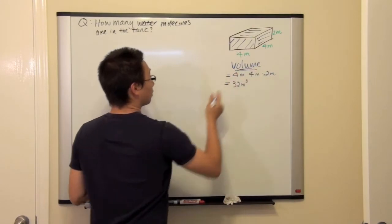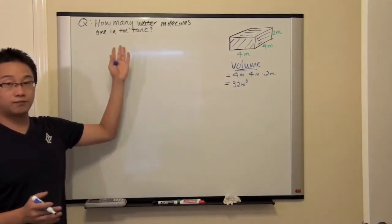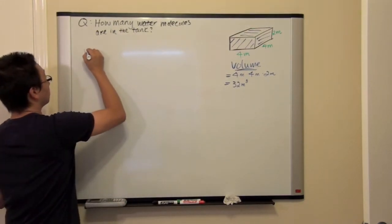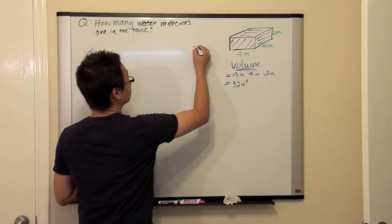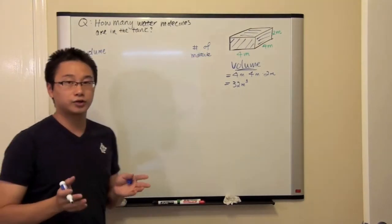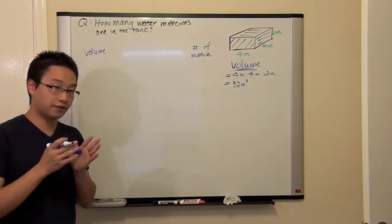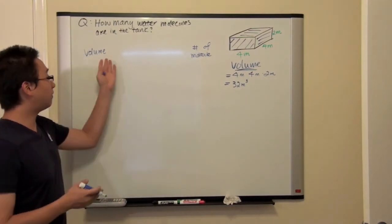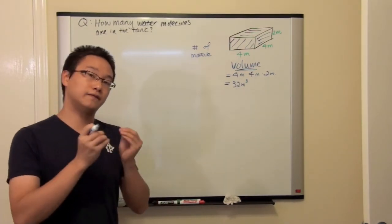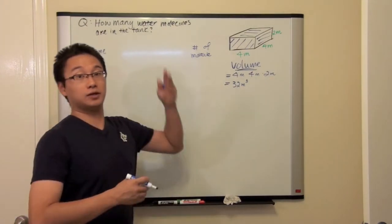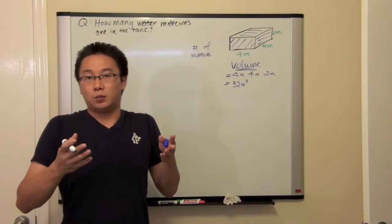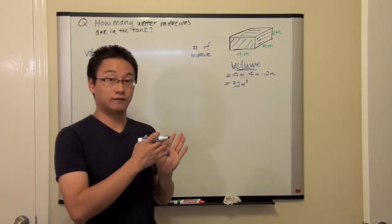Now, how are we going to connect the volume to the number of molecules? This seems to be the most difficult thinking part for many students. Let's do a map here. There are a couple of ways to think about this, and I am going to first tell you how to think in a forward direction. Now we have the volume, and the first thing we ask ourselves is: is there any direct relationship between the volume and the number of molecules, based on our knowledge and the question? The question just asks how many water molecules are in the tank — it doesn't give you any other information. So we don't really have any clue about a direct relationship between volume and number of molecules.